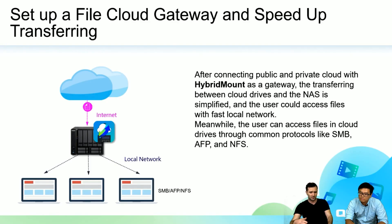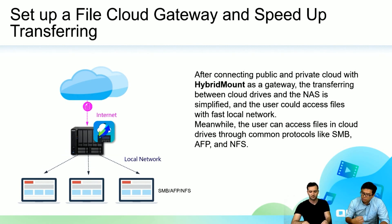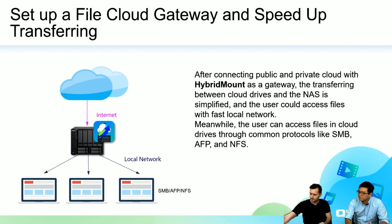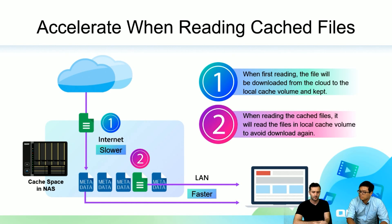For example, setting up a file cloud gateway speeds up file transferring. After you set a file cloud gateway with hybrid mount, some files in the cloud drive will be downloaded to the cache space in the NAS. After that, you can use your local network to access these files from the NAS to your computer with Samba or AFP protocols, which speeds up the transfer. The first time you read a file it must be downloaded from the internet to the NAS, but after that you can read the copy in the cache space over your LAN.